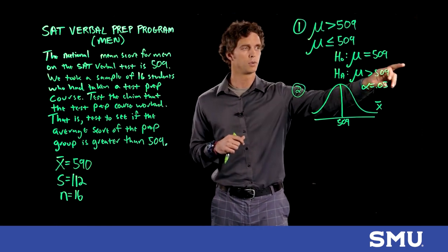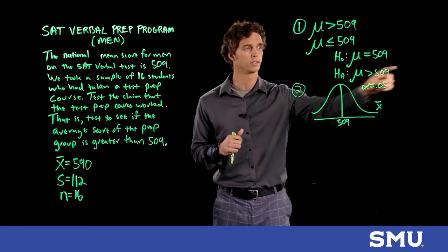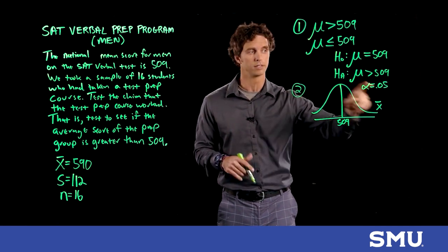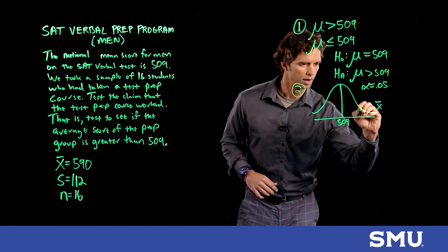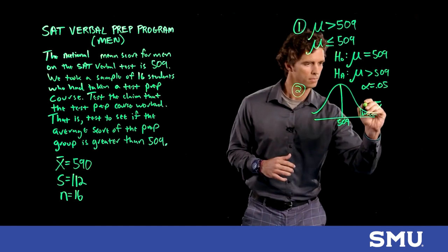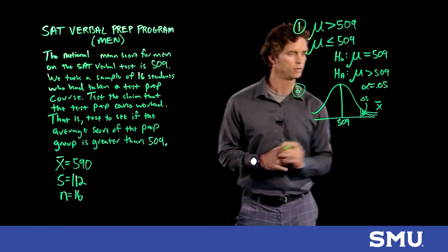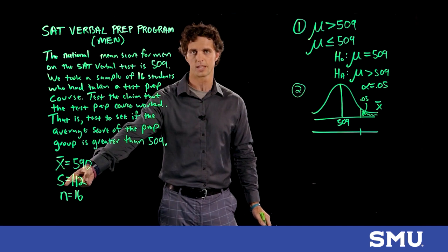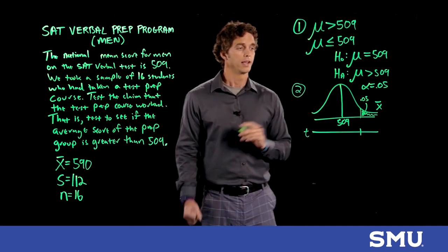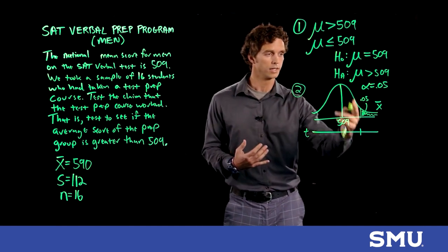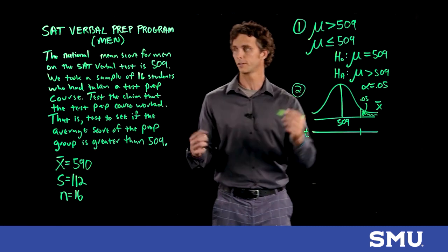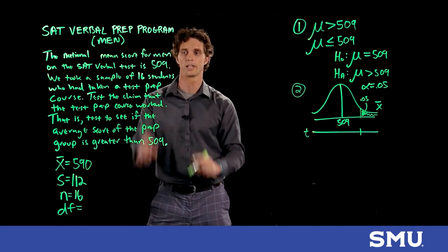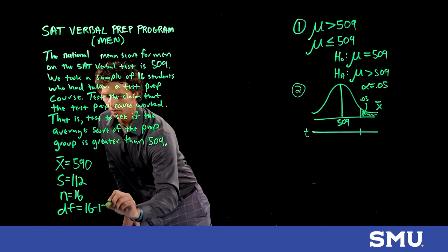If alpha is not given, assume 0.05. Looking at the alternative hypothesis determines whether the test is one-sided or two-sided — and which side. This is clearly a right-tailed test, since we're trying to see if the average score actually increased. I'll label 0.05 on the right tail and do a reverse lookup. Since I don't know the population standard deviation I must use the sample, so this will be a t-test. Degrees of freedom for this one-sample test: n minus 1 = 16 − 1 = 15.